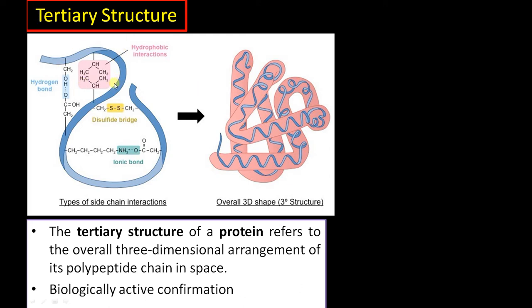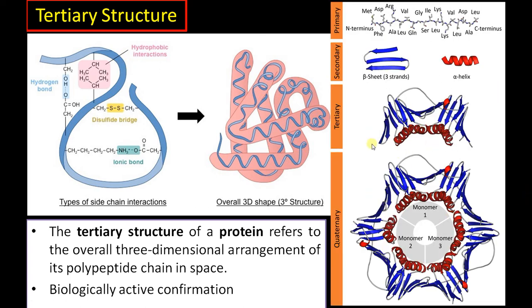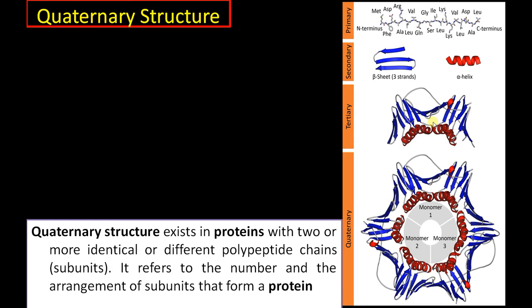The tertiary structure is stabilized by all types of interactions. One major interaction is hydrophobic interactions: hydrophobic amino acids tend to be inside the protein, while hydrophilic amino acids are exposed to the outside. The tertiary structure — made up of beta sheets and alpha helices — is the three-dimensional structure and is the biologically active conformation for the majority of proteins.